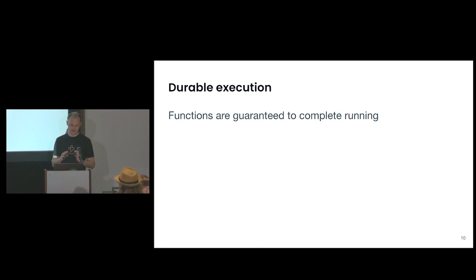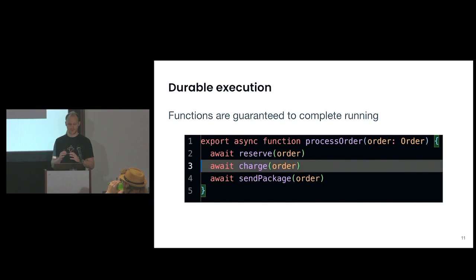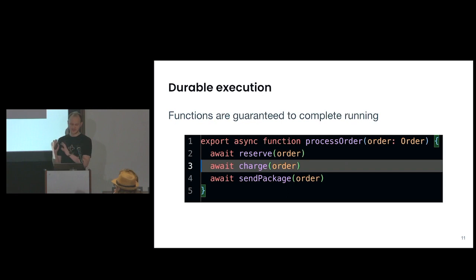In Durable Execution, functions are guaranteed to complete running. If I have a process order function with three steps — talking to the inventory service to reserve inventory, then the payment service to charge for the order, then sending a package — and if the process crashes after completing the first two steps, this function, if it's a durable function, will continue running on a new process with all state intact from the same location in code. It'll start running on line four. All state includes the values of local variables, the call stack, and threads.